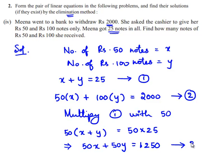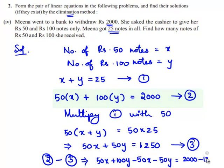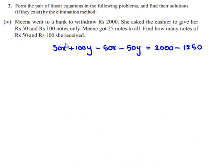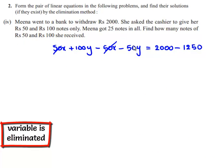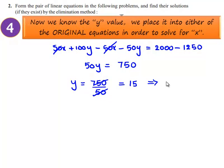Assume this as equation number 3. Now, equation number 2 minus equation number 3 gives 50X plus 100Y minus 50X minus 50Y is equal to 2000 minus 1250. 50X and minus 50X cancel, leaving 50Y equals 750. So the value of Y is equal to 750 divided by 50, which is 15. The value of Y is 15.